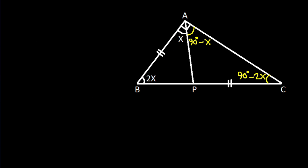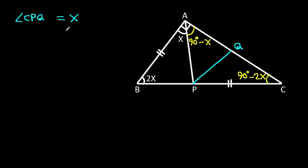From point P, we make a construction: draw PQ such that angle CPQ is x. This is our construction.